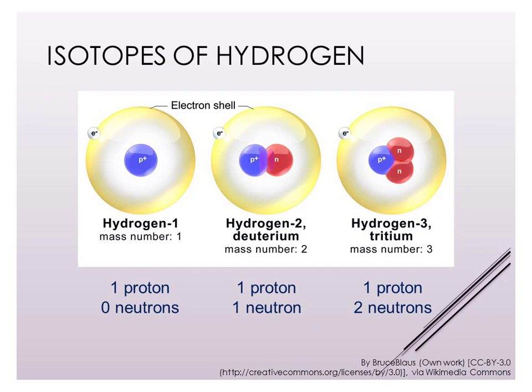As we go to hydrogen-2 and hydrogen-3, the number of protons doesn't change because it's still hydrogen. The number of electrons doesn't change because we still have neutral atoms — isotopes and ions are two different things. Hydrogen-2 has one proton and one neutron, both found in the nucleus of the atom. Hydrogen-3 has one proton and two neutrons. These are all naturally occurring isotopes of hydrogen. In a sample of hydrogen, the vast majority are hydrogen-1, but some are hydrogen-2 and an even smaller number are hydrogen-3.